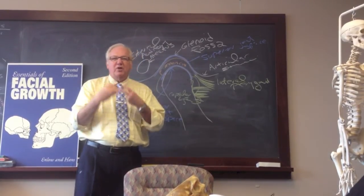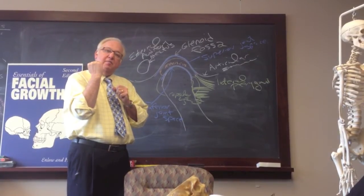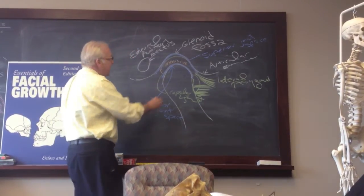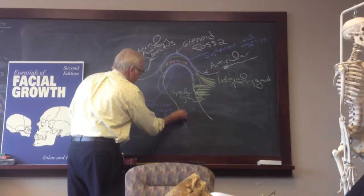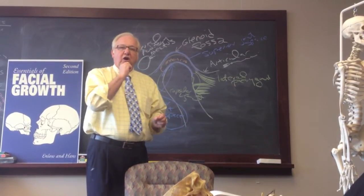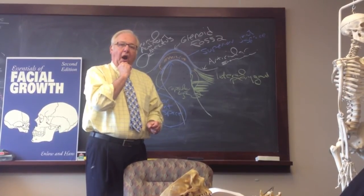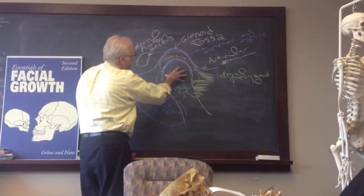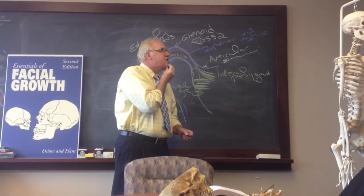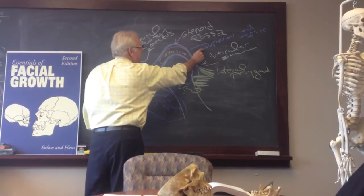When we chew, open, and close our mouths, the mandible both rotates and translates. Rotation occurs in the inferior joint space — if you just open your jaw straight, that's rotation occurring in the inferior joint space. If you take your jaw and jut it forward, that's translation, taking place predominantly in the superior joint space.